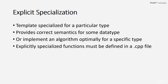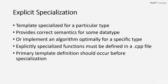When you specialize a function template or class template, the definition should be written in a .cpp file, not a .h file. The reason is that explicitly specialized functions are already instantiated, so if you define them in a header file it will lead to violation of the one definition rule. The primary template definition should occur before you specialize the function or class template.